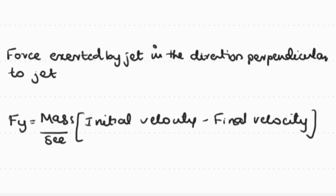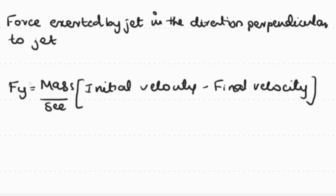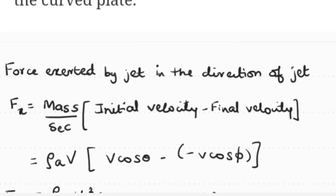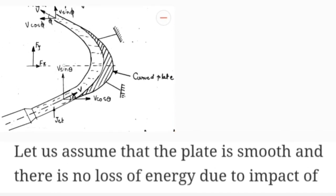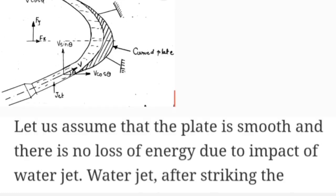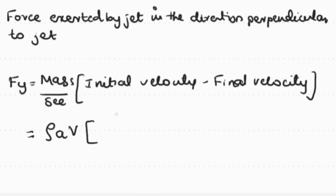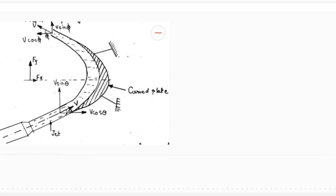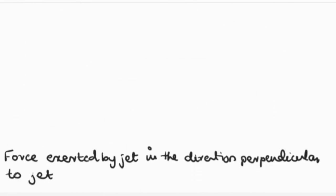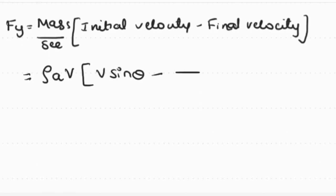Similarly, we derive the equation for force in the y-direction (perpendicular to the jet). Fy equals mass per second times (initial velocity minus final velocity), where mass per second is rho times A times V. The initial velocity perpendicular to the jet before hitting is V sin theta, acting upward. The final velocity perpendicular to the jet after leaving is V sin phi, also acting in the perpendicular direction.